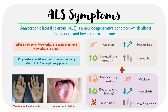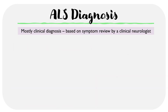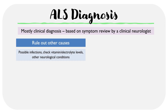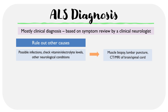The diagnosis of ALS is mostly a clinical diagnosis based on symptom review by a trained clinical neurologist. However, it is important to rule out other causes, which can include possible infections, vitamin or electrolyte deficiencies, and other neurological conditions. Depending on the level of clinical suspicion, patients may undergo muscle biopsies, lumbar punctures, and imaging of the brain or spinal cord to eliminate other causes.